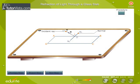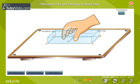Fix two pins on the incident ray I.O. Place the glass slab within its boundary ABCD.